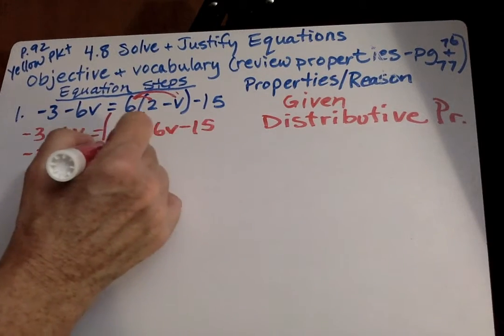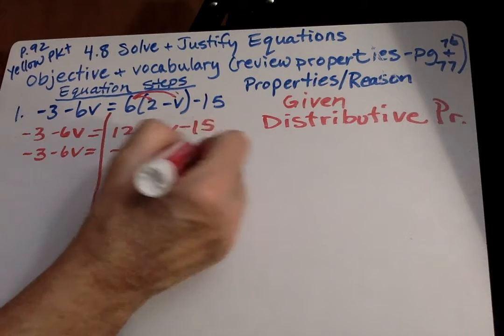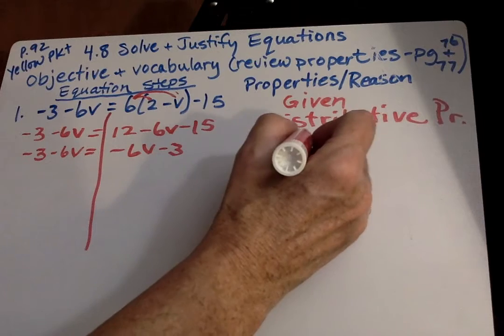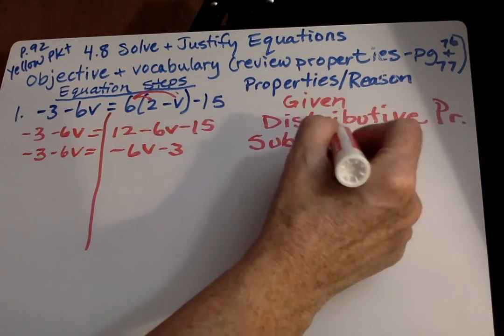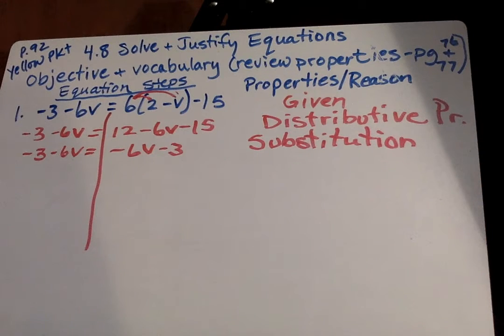12 and 15, 12, write as 15. That's simplify, also known as substitution. If you put simplify there, that's okay.